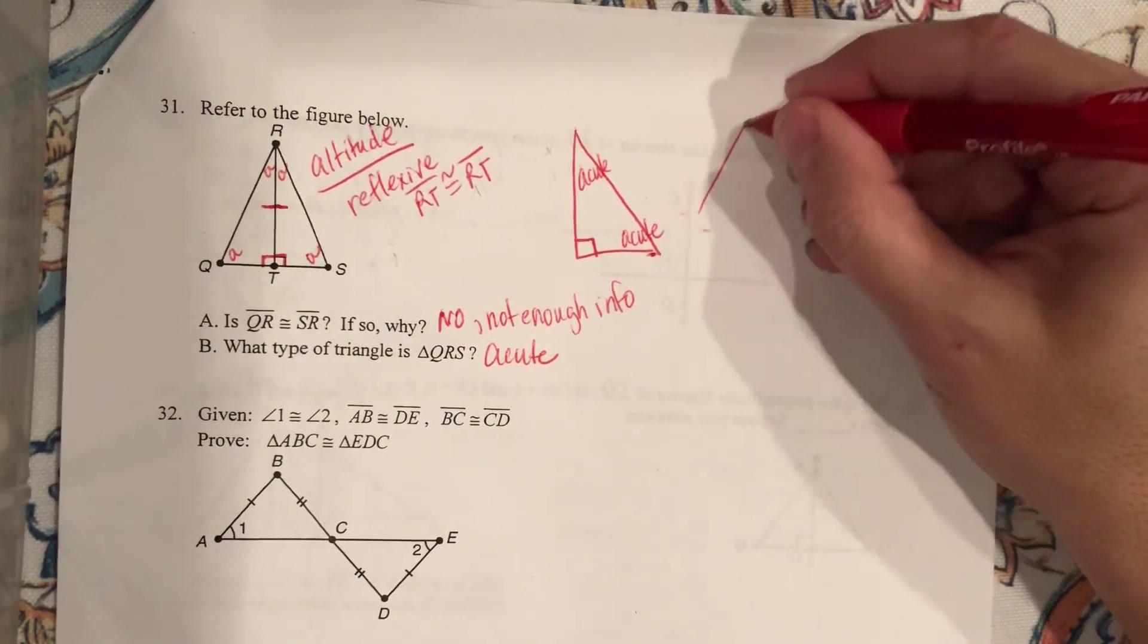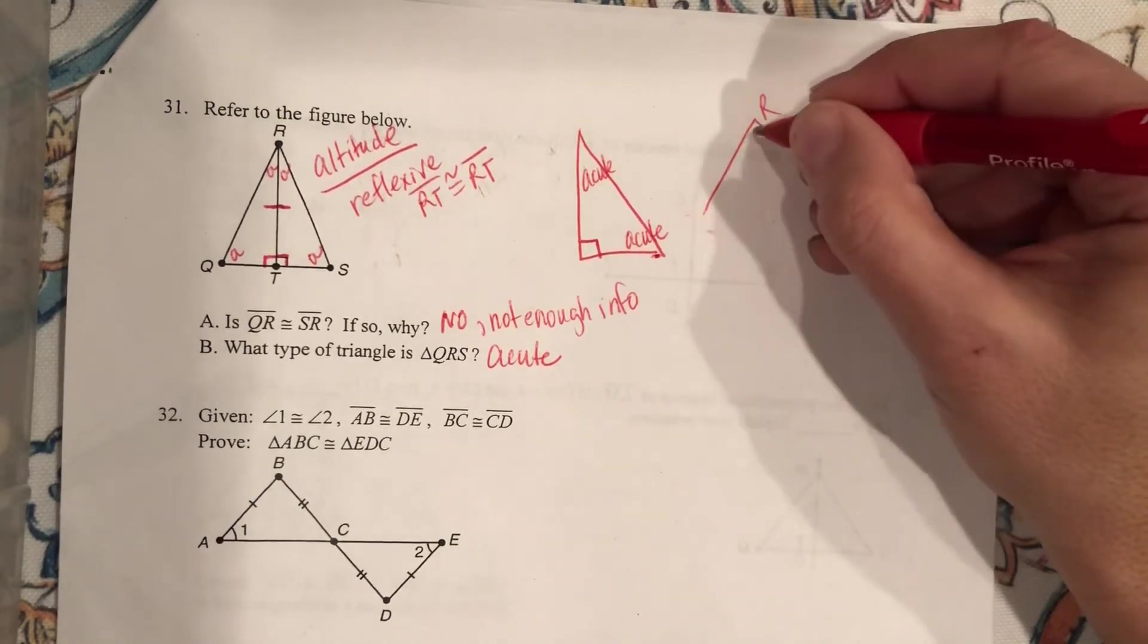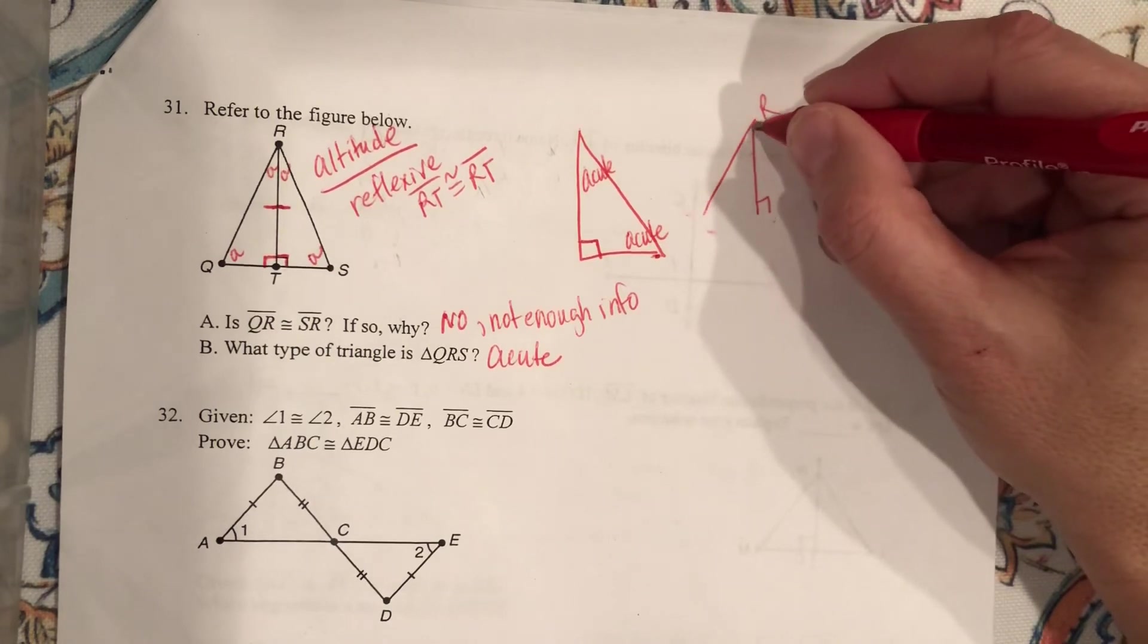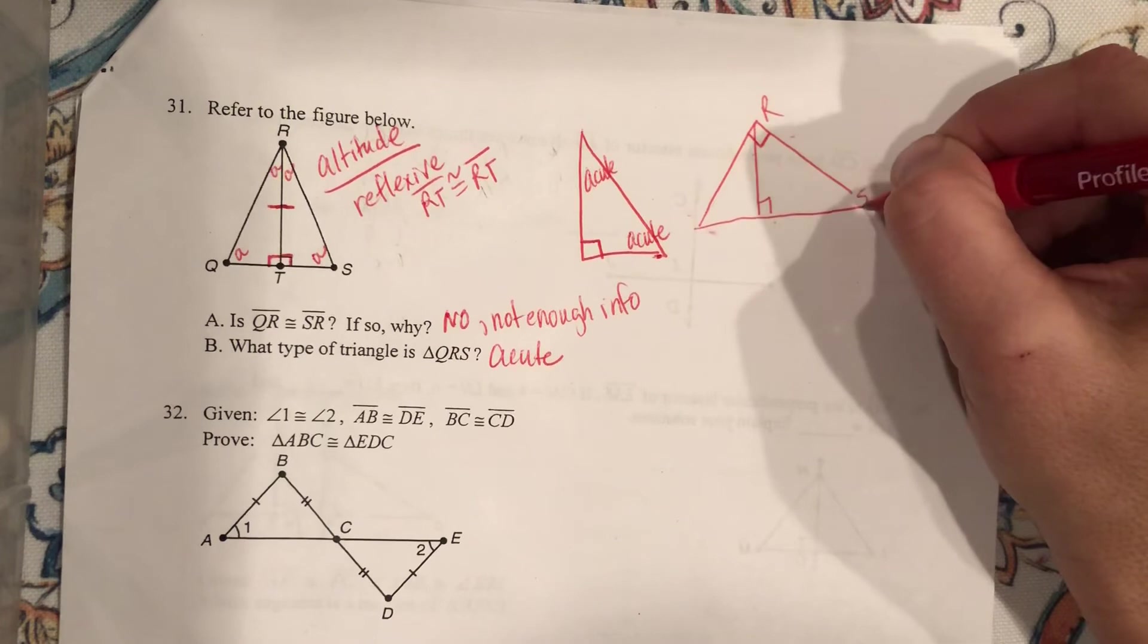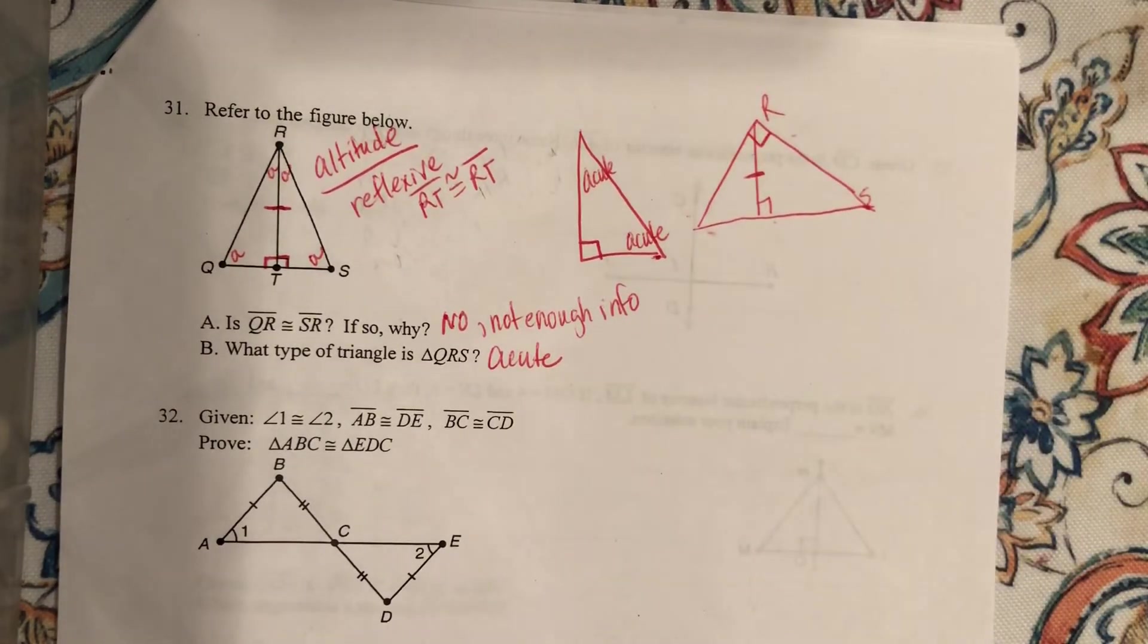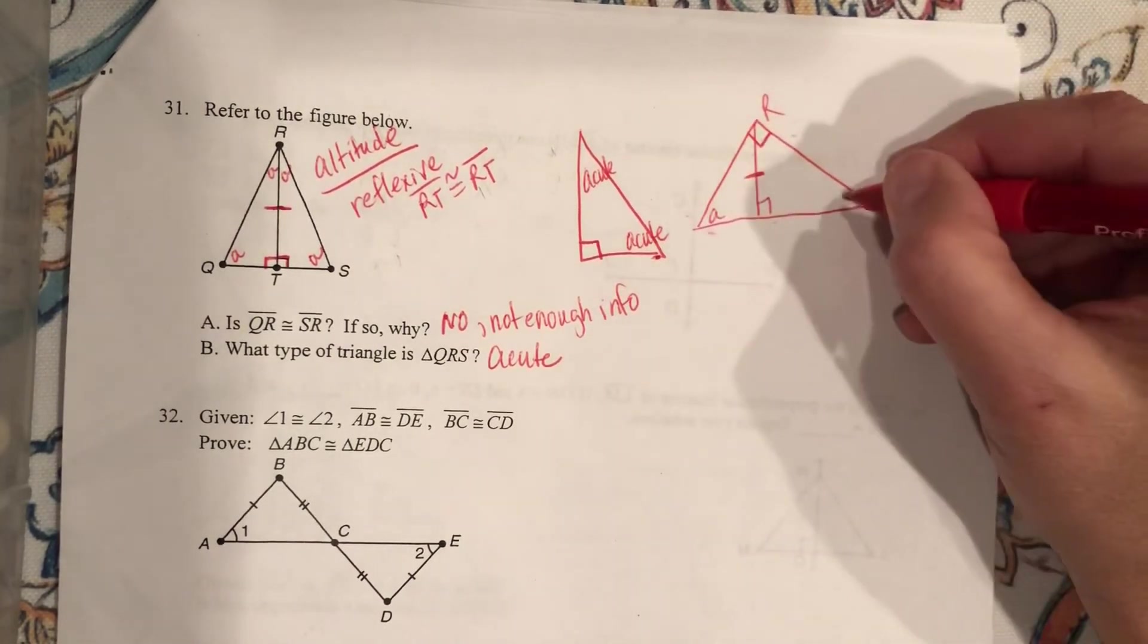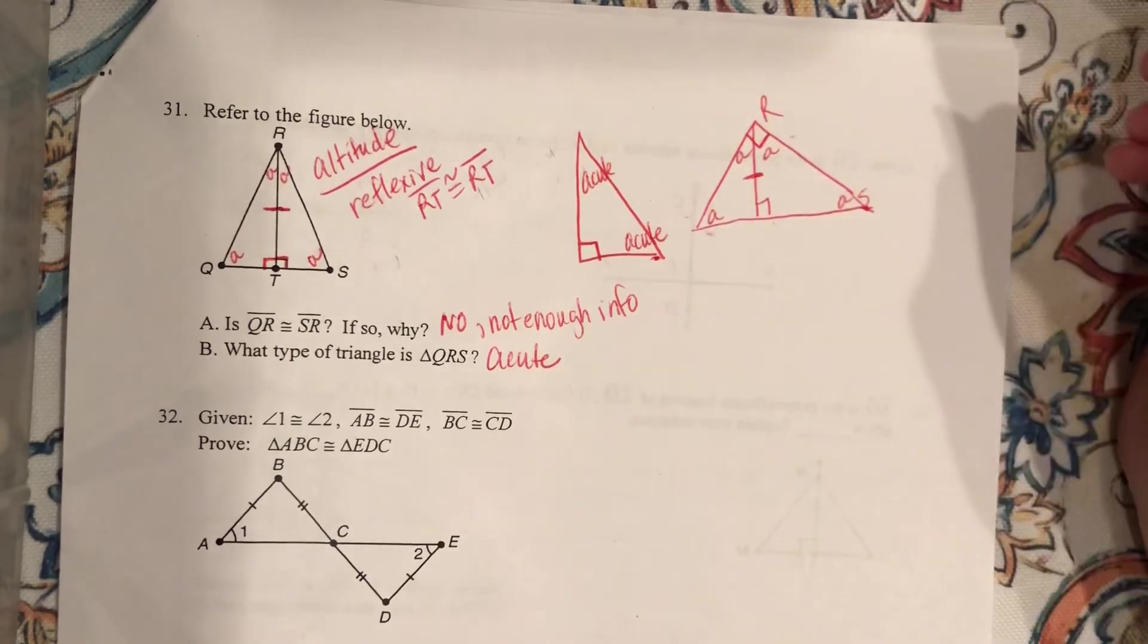Well, let's assume that angle is a right angle. Let's assume that angle is a right angle. We'll assume that this one is a right angle. Okay. If that one is a right angle, I've still got my acute. I've got my acute, this one's acute, and this one's acute, okay?